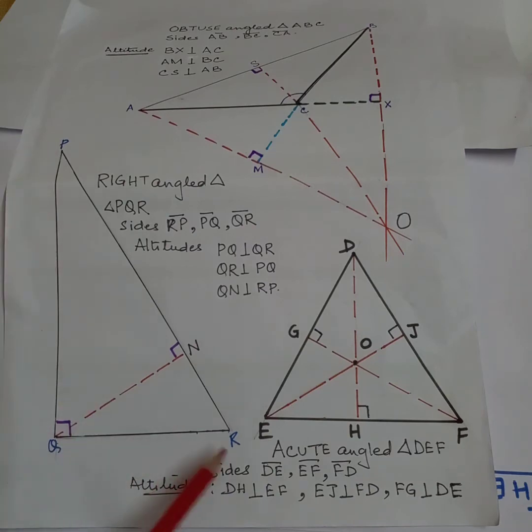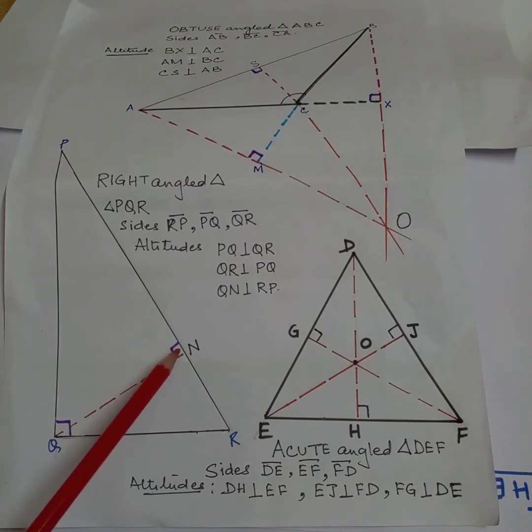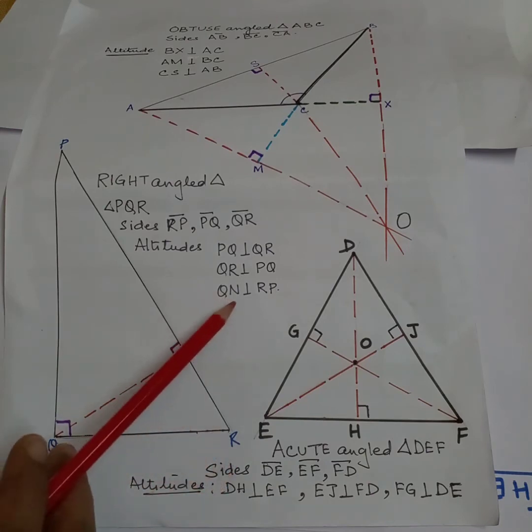And from the hypotenuse, the altitude is QN, which is perpendicular on PR.